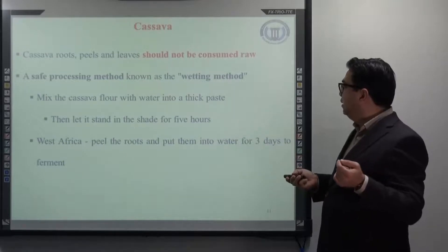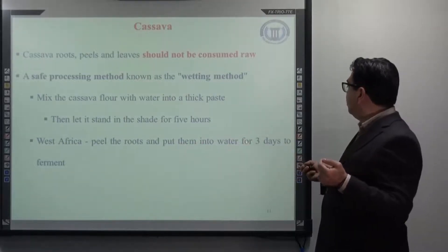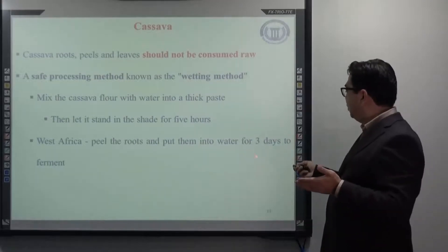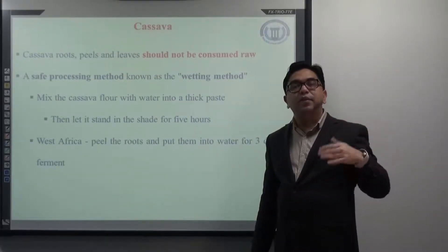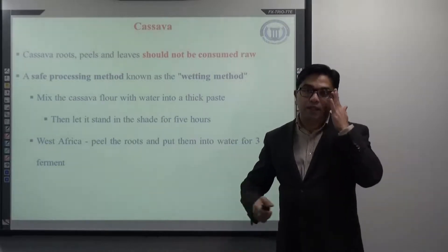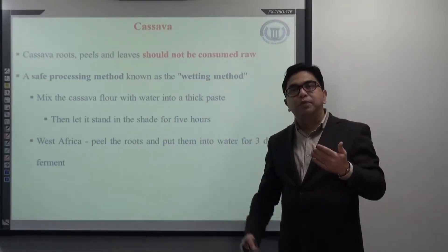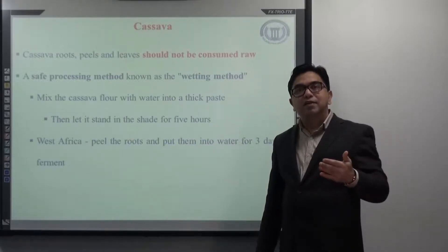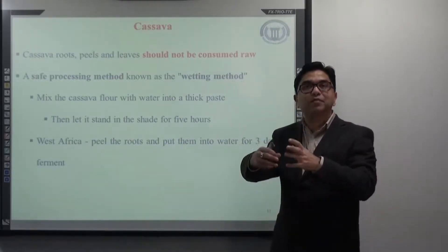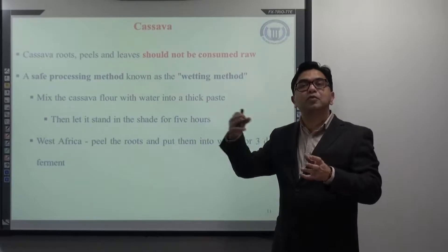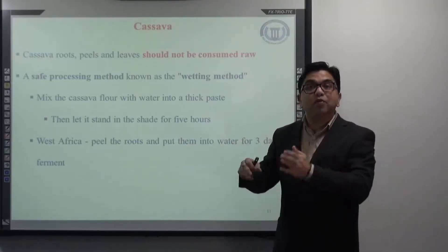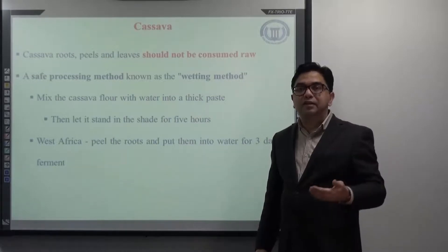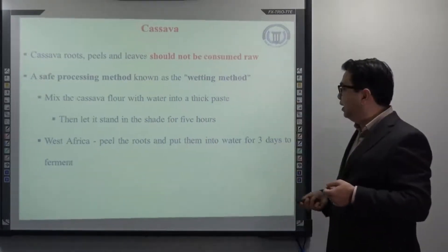In West Africa, roots are peeled and put into water for 3 days for fermentation, though the time can range from 3 to 7 days. Unfortunately, hunger-driven village people who don't understand the science often lack the patience to wait that long, and tend to consume cassava immediately before properly processing it, suffering from various diseases as a result.